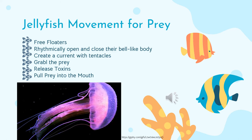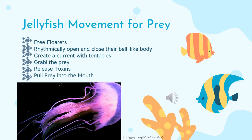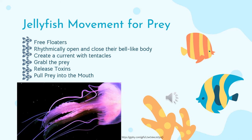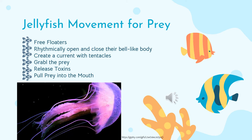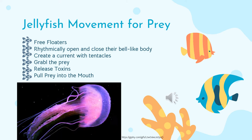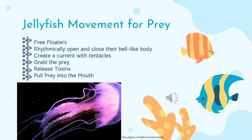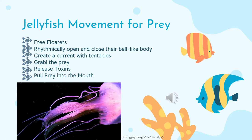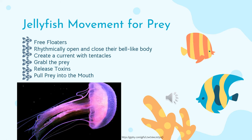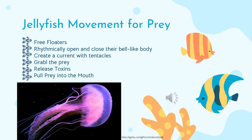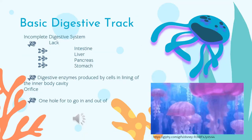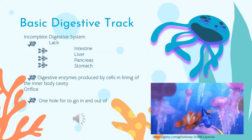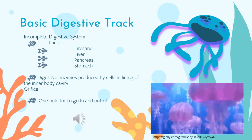Once the jellyfish has the prey wrapped around its tentacles, it releases a toxin. This toxin is able to stun the prey and make sure it doesn't swim away. The jellyfish will then pull the prey closer and eventually put it into their mouth. Once the prey is in the mouth of the jellyfish, we move to the digestive tract.